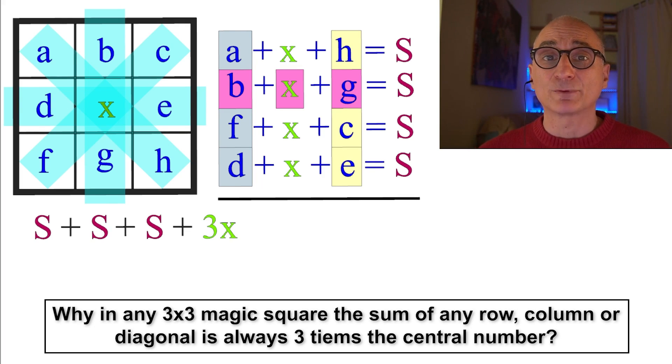And we are left with three x's and everything equals four S's. Now we simplify and we get three x equals S and that's what we wanted.